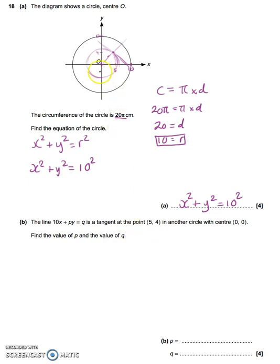So we can calculate the gradient of this line. This line we can calculate the gradient of by working out the difference in y and dividing it by the difference in x. So the difference in y is 4. So I'm going to write down gradient of perpendicular to the tangent. So the gradient of the perpendicular line to the tangent is 4, difference in y, divided by difference in x, over 5, which is 4/5.